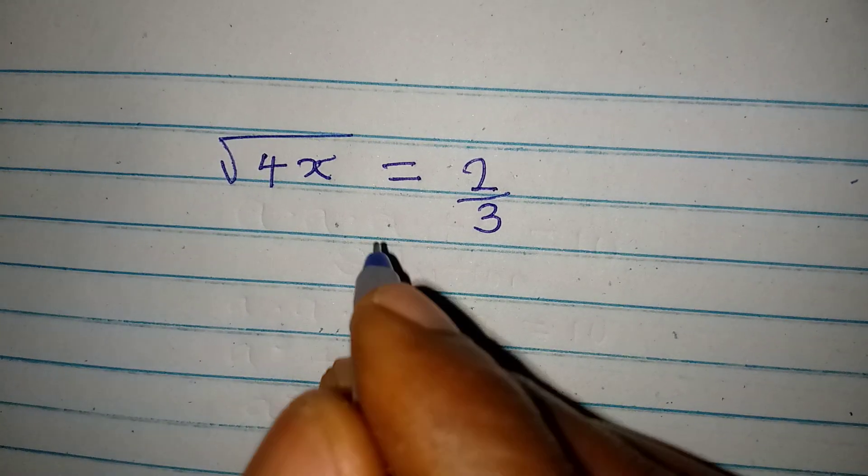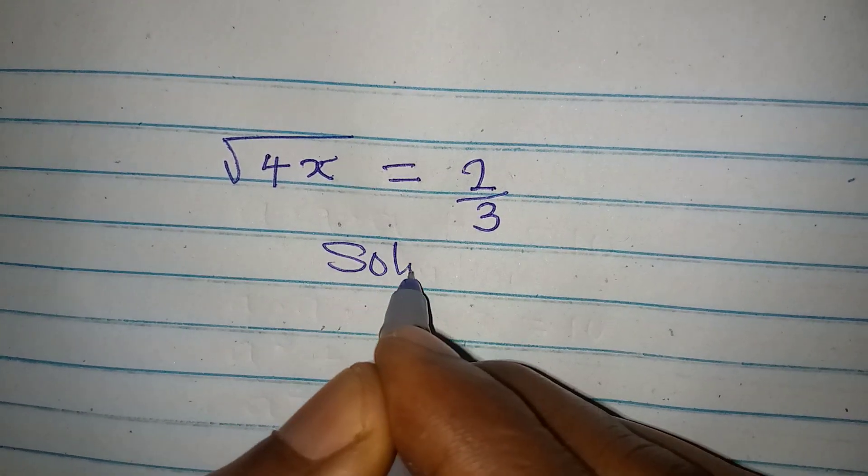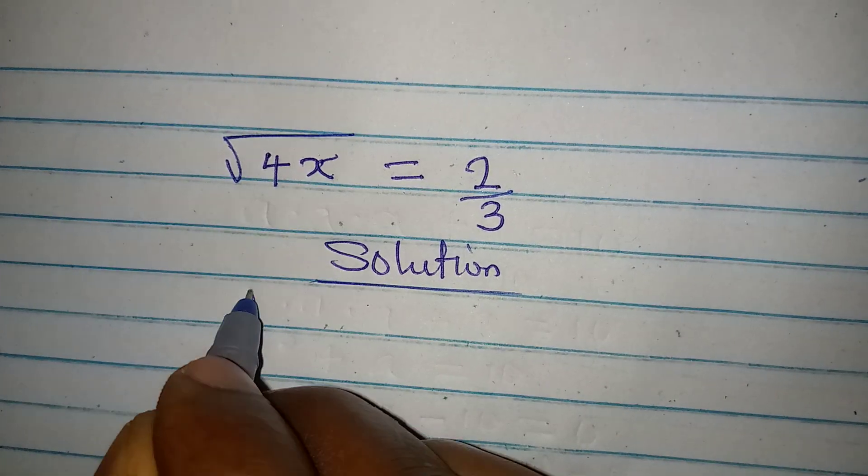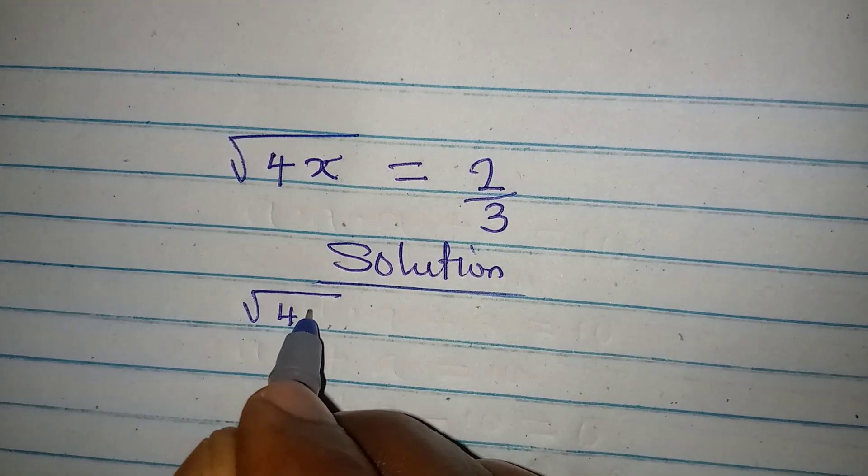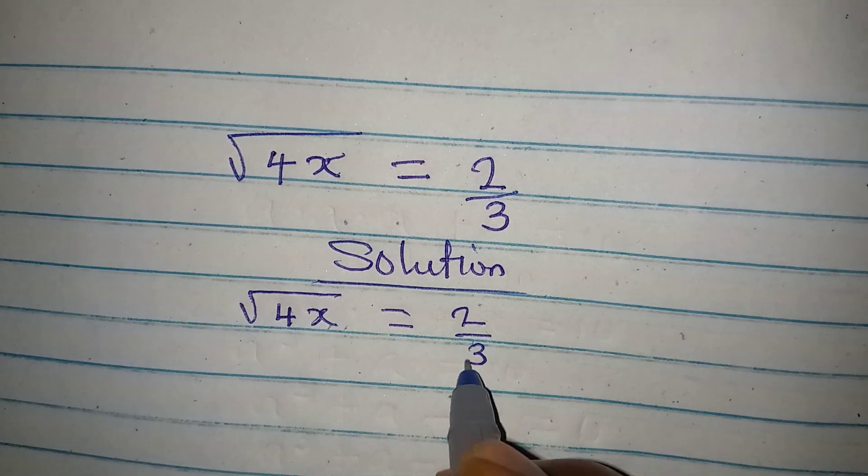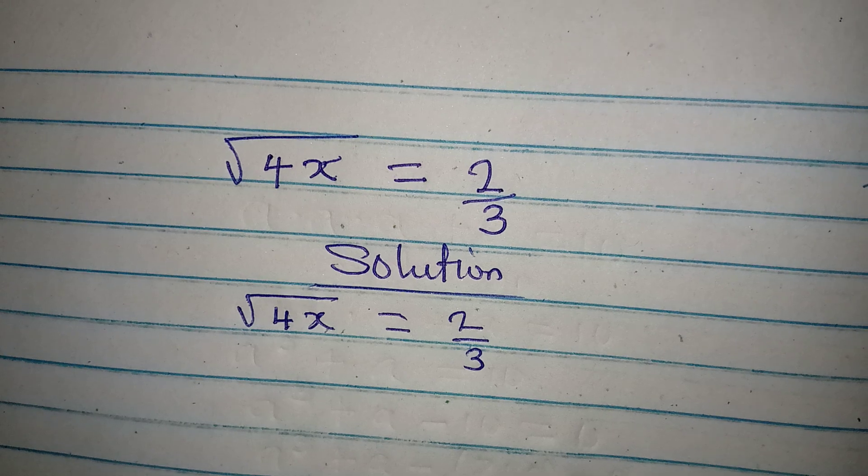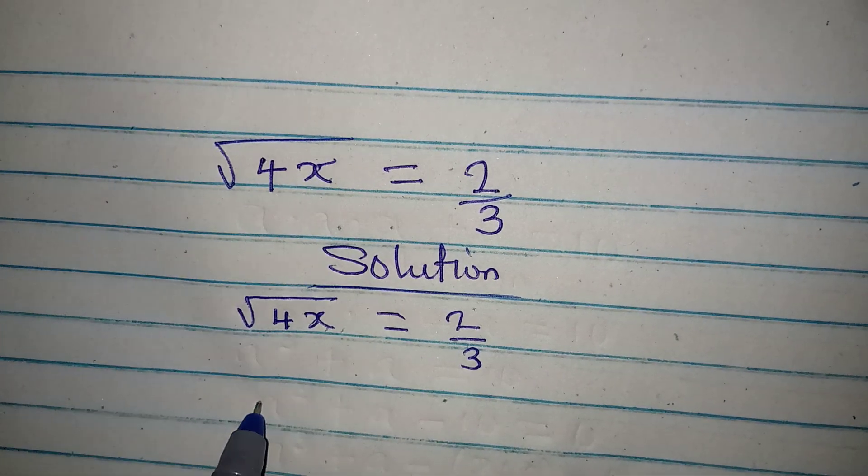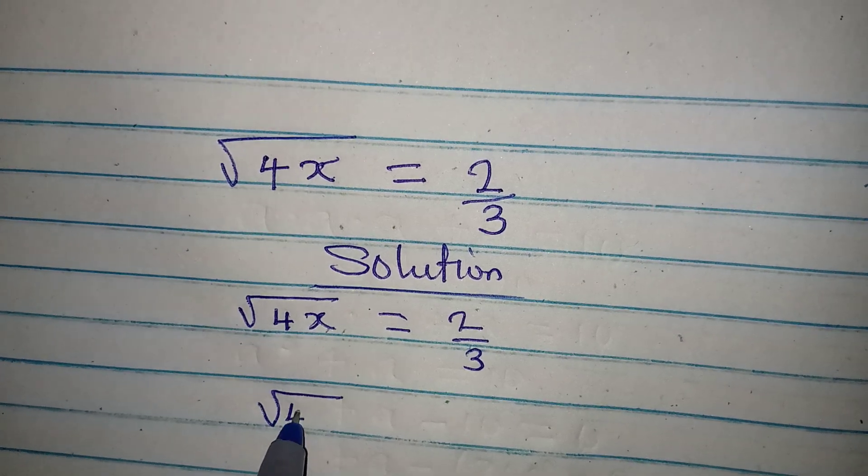Hello everyone, let's deal with this equation very quickly. We have square root of 4x being equal to 2 over 3. Now what do we do first? Remove this square root, so it's going to be square root of 4x to the power of 2.